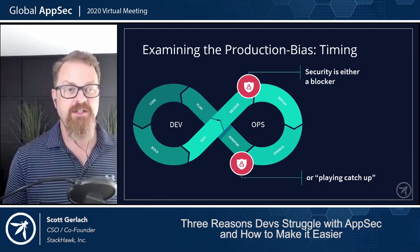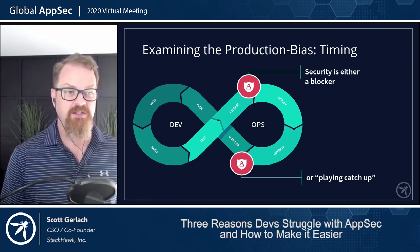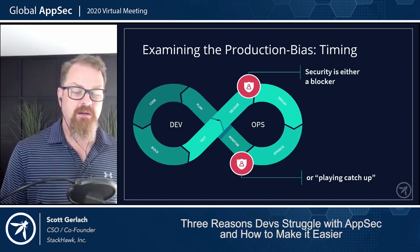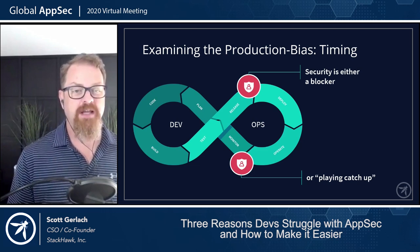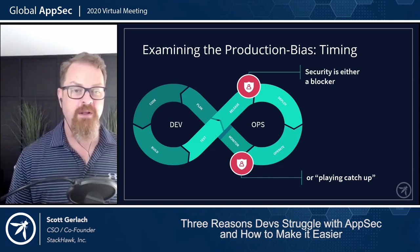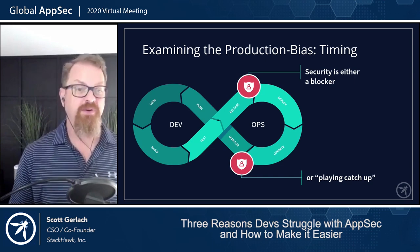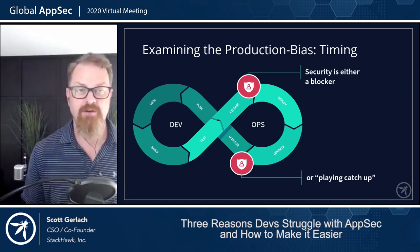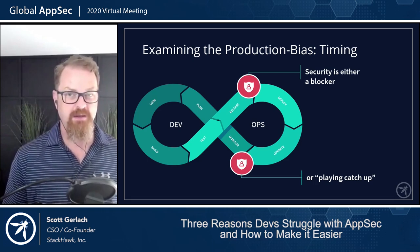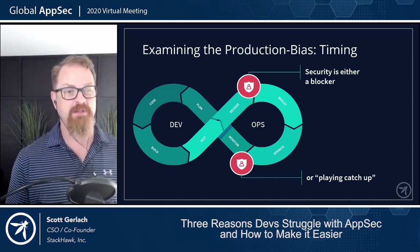There's also a timing issue associated with this production bias. As companies are rapidly shipping code to production, security is not baked into this workflow. Either you're not rapidly shipping, in which case AppSec processes act as a blocker — don't deploy anything to production until I check it — or if you're scanning in production after something gets deployed, then you're playing catch-up and unaware of things getting put into production. Neither of those things is DevOps-friendly.